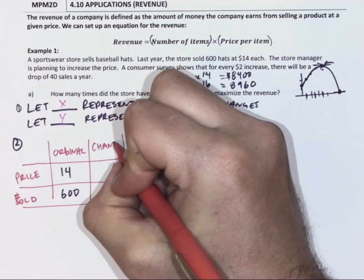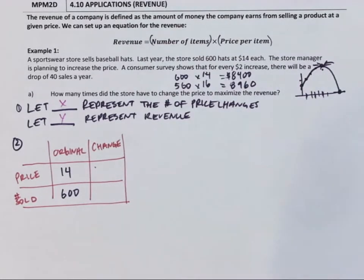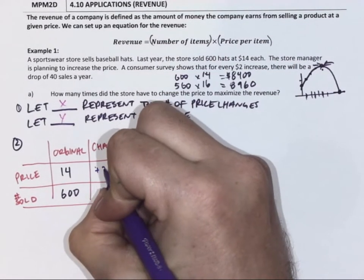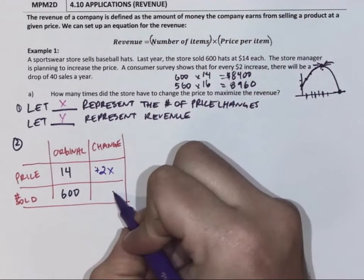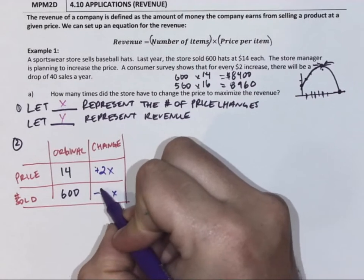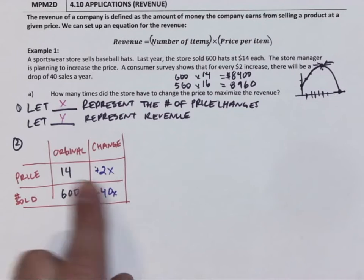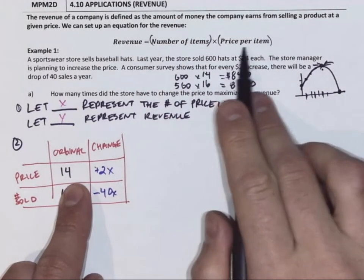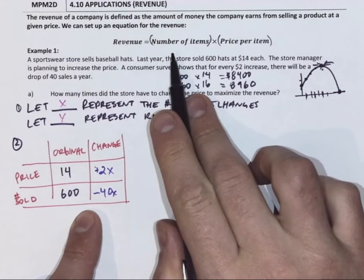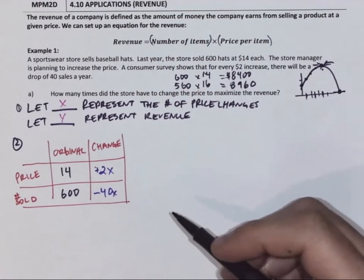So we want to know after changes, each change we make is going to add two dollars. So for each change X, we're going to add two dollars, and each time we change it, we're going to lose minus forty customers. That is one bracket, and that is the other, because that is the price per item and that is the number sold. Original with the change. So now we have the equation.